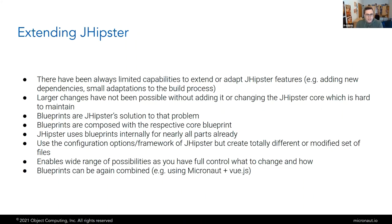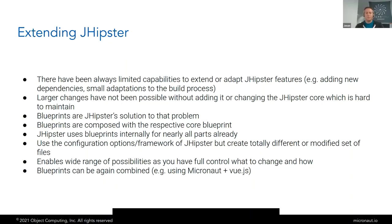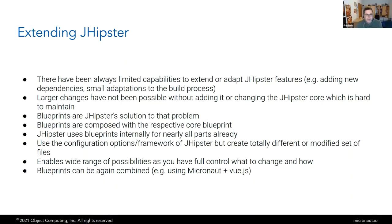When it comes to extending JHipster, there was originally a limited API with a module system where you could add dependencies to the build file or generate a small set of files. But larger changes required changes to the JHipster core, which created a maintenance burden on core maintainers. So that's how blueprints came about — to allow more extensive customization without core changes.